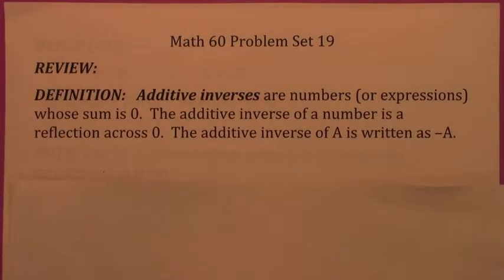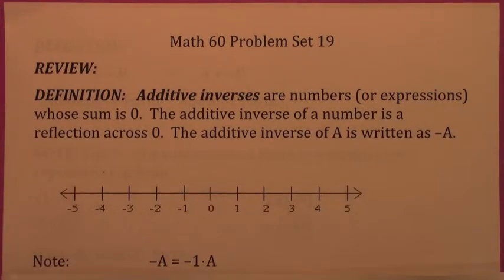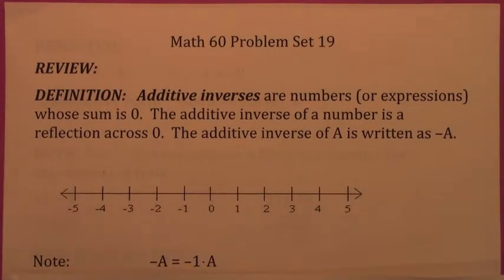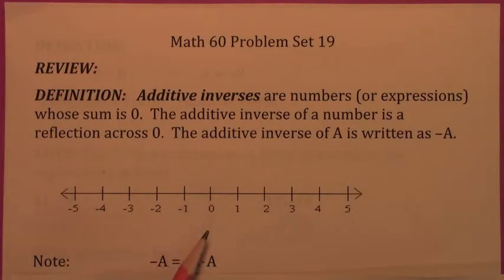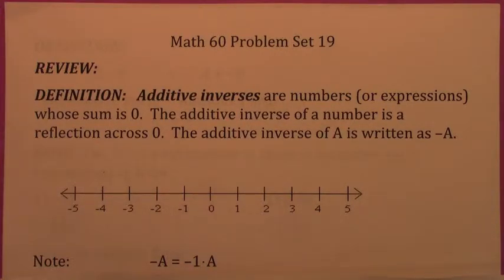Before we do that, let's review additive inverses. Additive inverses are really the same thing as opposites. There are two ways to think of an additive inverse. Two numbers are additive inverses if they add up to give zero. Any two numbers or expressions that add up to give zero are additive inverses.